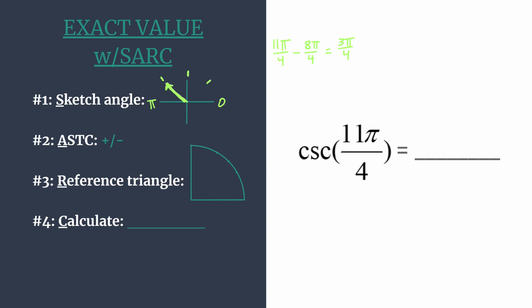So now we can decide, should our exact value be positive or negative? And this is one of the most common errors when finding exact values is missing the sign or forgetting to think about it. And that's why I like to do it second. So ASTC, think all students take classes.